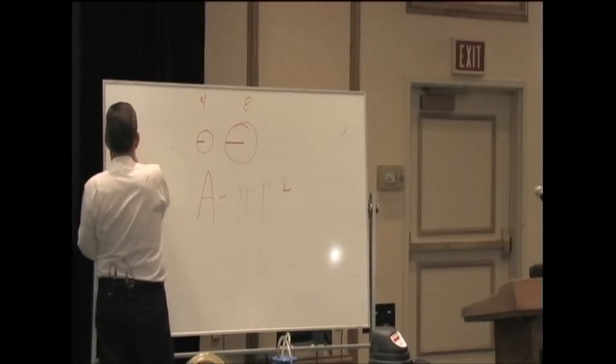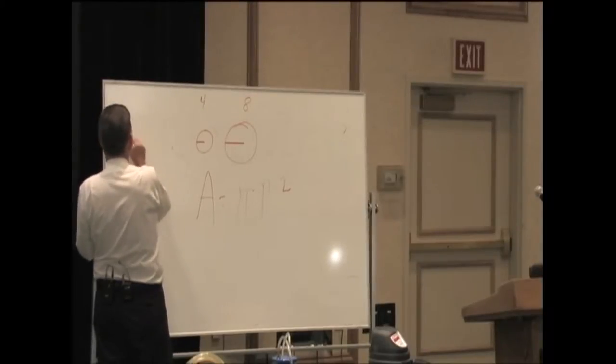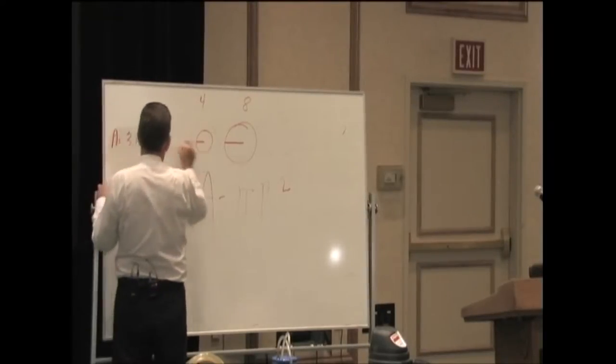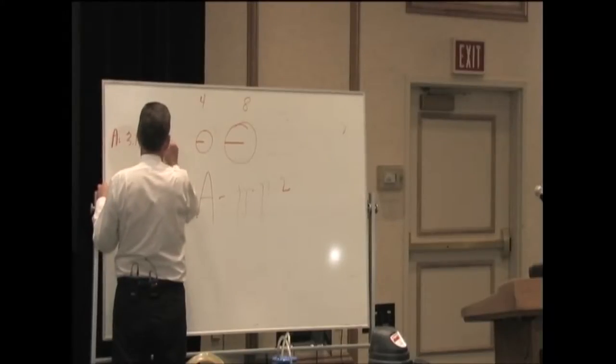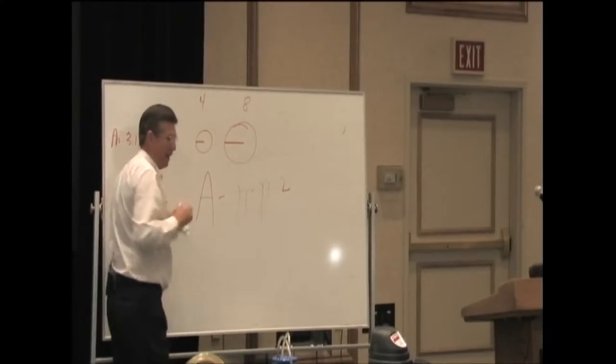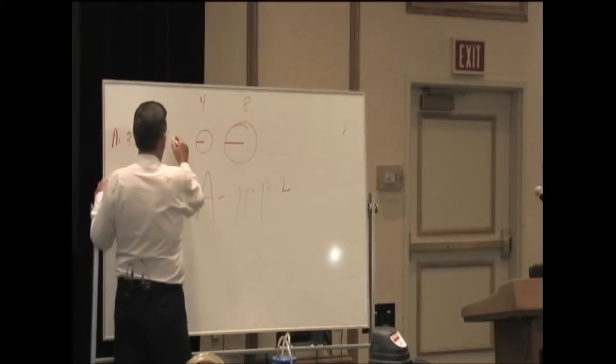Area equals pi r squared. So area equals 3.14 times the radius squared, times two times two. I know what the answer is. I'm going to do the math, but it's 12.56.